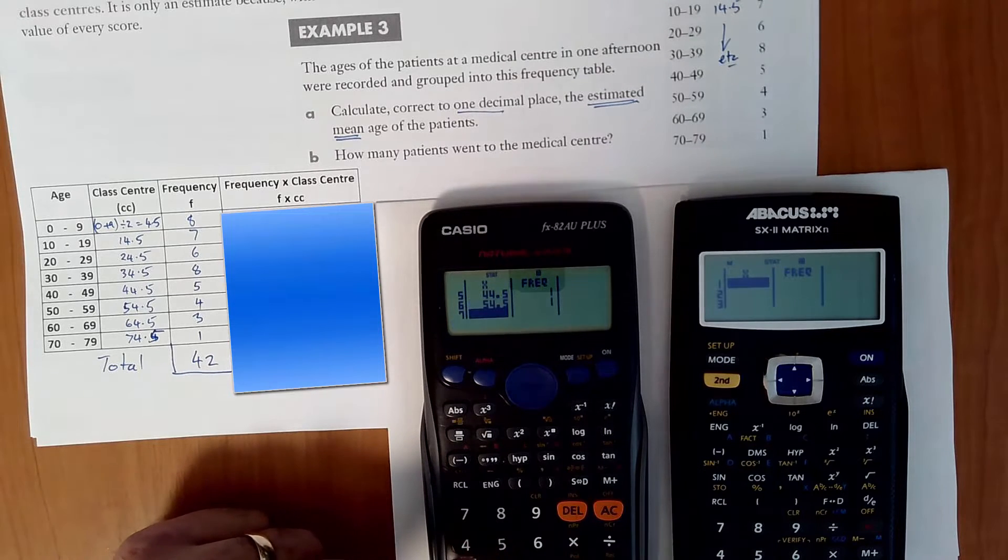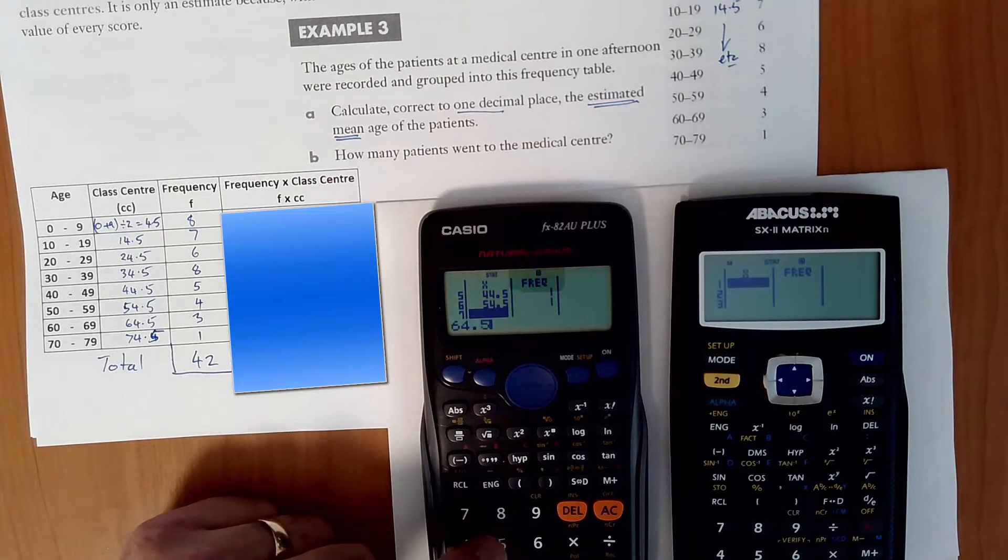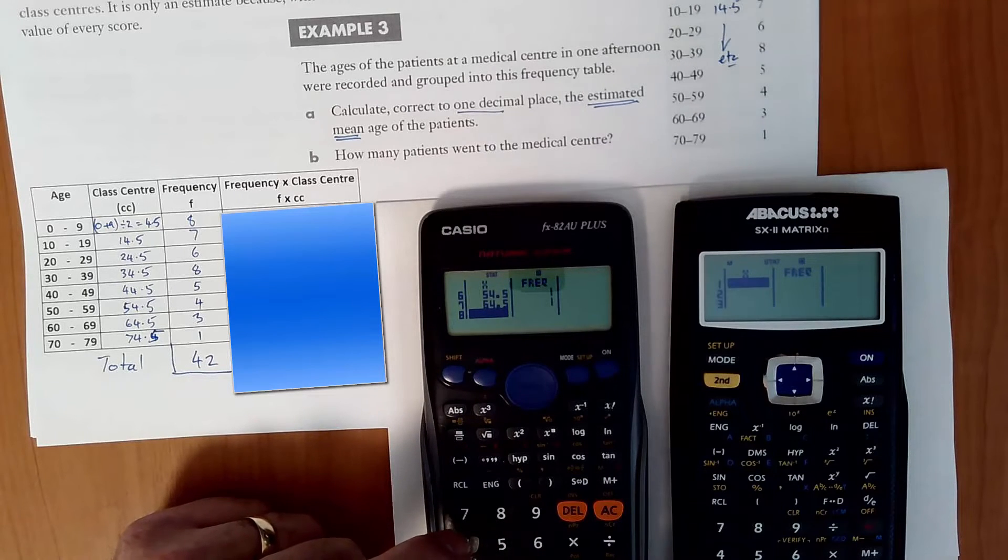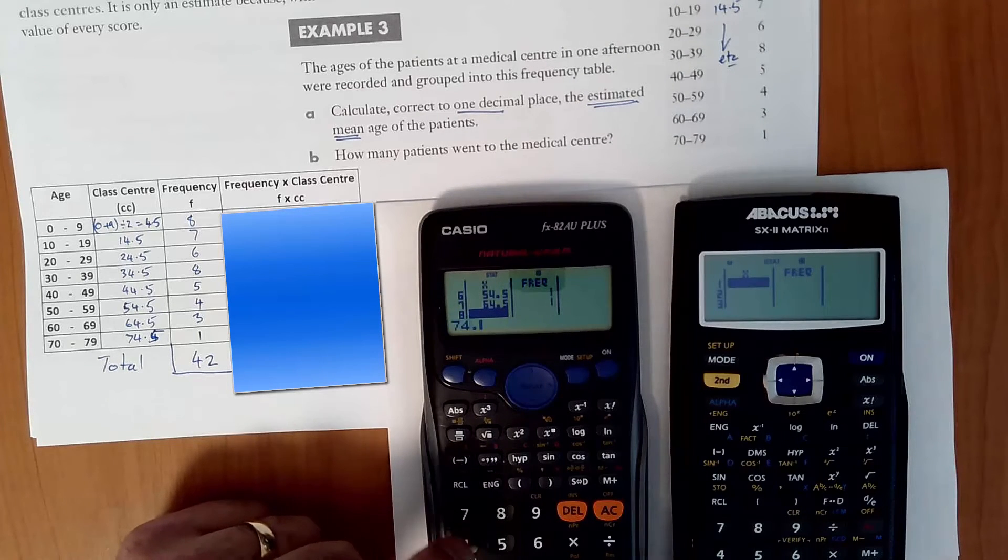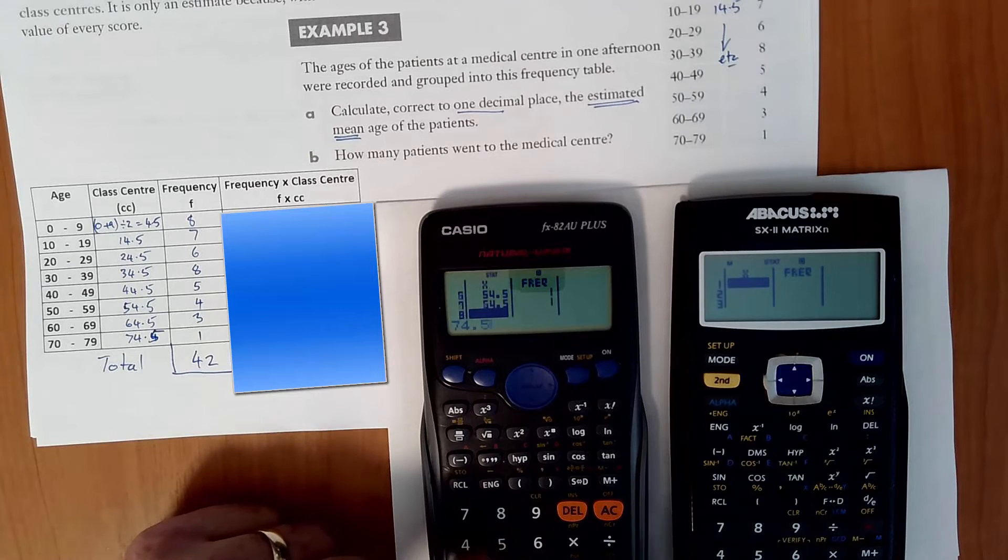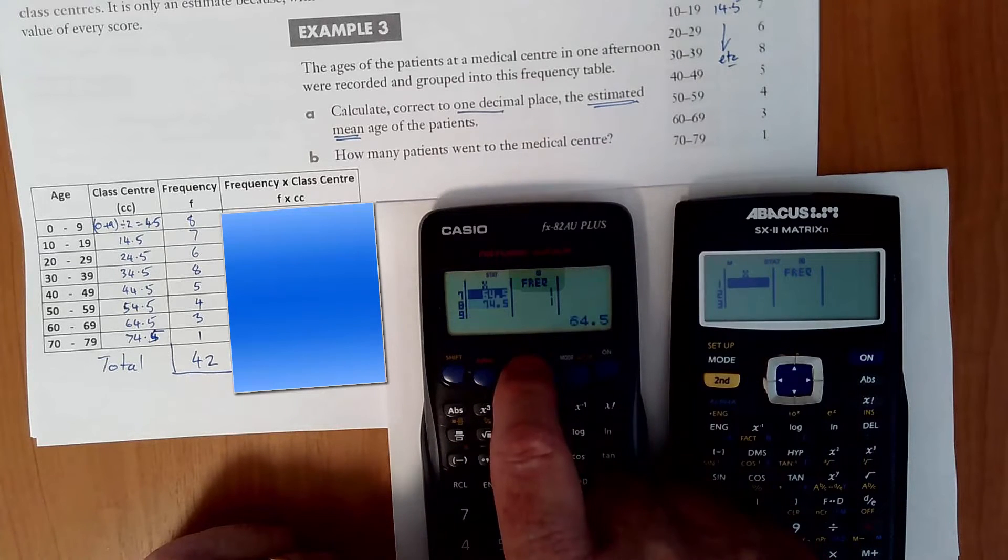That's the beauty of these calculators over the old ones. You can see your data and you can see if you've made an error or not. Where we're up to, 64.5, now 74.5. Okay, so scrolling back up. Okay, so they're all correct.